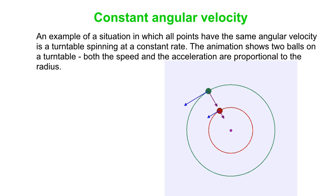Okay, so we'll look at an example where two objects have the same angular velocity, but there are different distances from the center. This could be two balls on a turntable, something like that. What you see is that the speed and the acceleration are both proportional to radius.